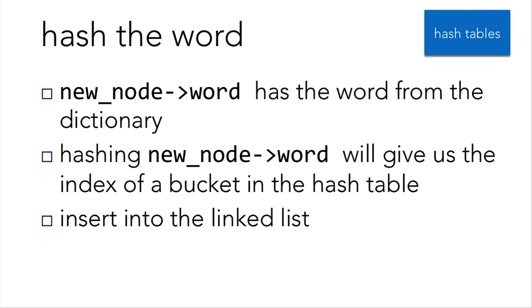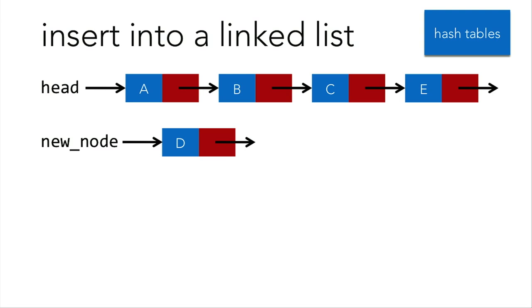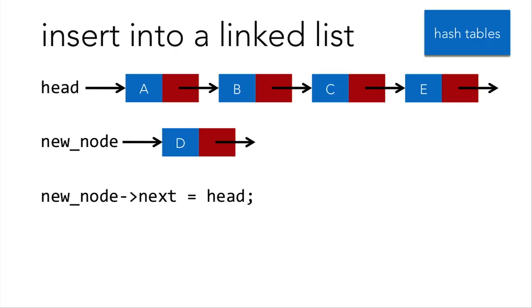It's kind of like a library — based on the author, you know which shelf a book goes on, and that book will always belong on that same shelf. So if new_node->word has the word from your dictionary, hashing new_node->word gives us the index of the bucket in the hash table. Then we insert that into the specific linked list indicated by the return value of the hash function. For inserting a node at the beginning of a linked list: if head points to the beginning of the list, simply assigning head to new_node would lose the link to the rest of the list. Instead, set new_node->next = head, then head = new_node — this preserves all links.